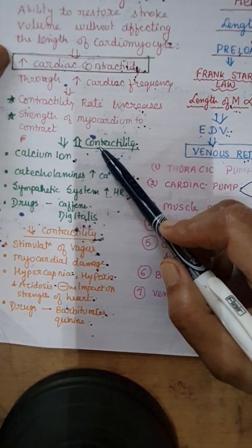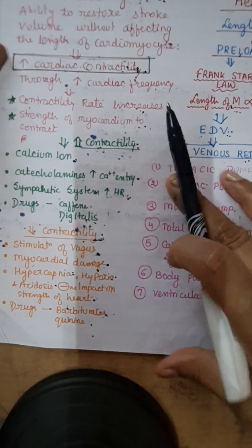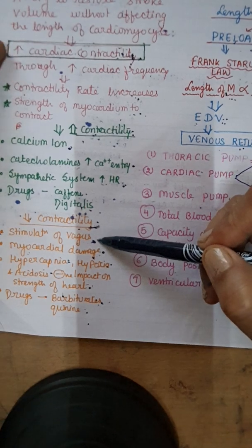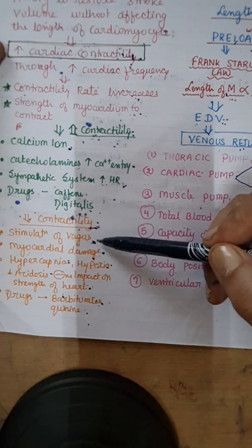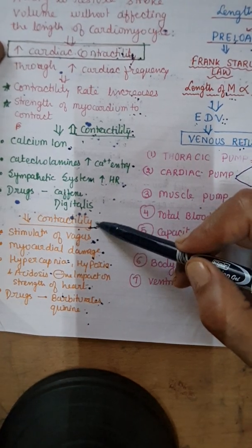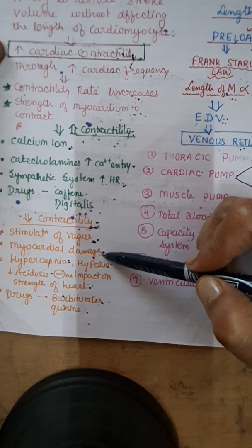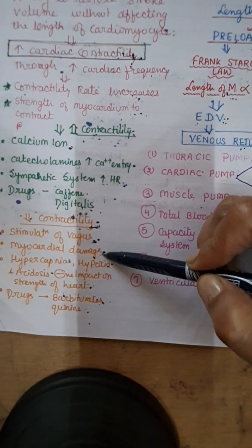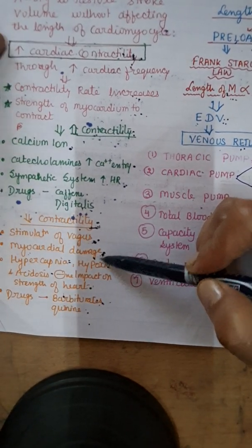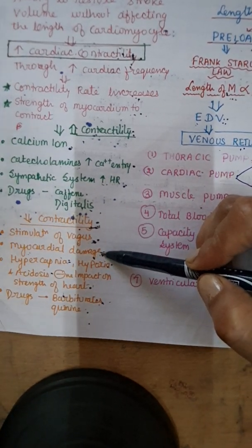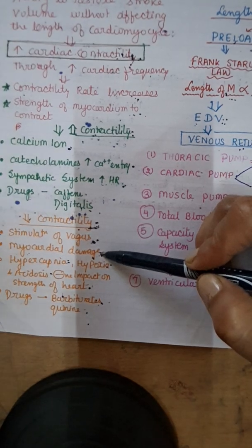Factors that decrease cardiac contractility: first is stimulation of the vagus nerve, or the parasympathetic system — parasympathetic activity decreases cardiac contractility. If there is damage to the myocardium, the myocardium is unable to work efficiently or propel blood efficiently, so its strength decreases, ultimately affecting contractility and thereby stroke volume.